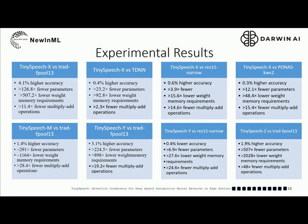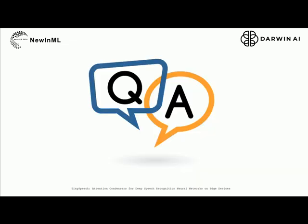Comparing tiny speech version Z with Terad FPUL13, it has about 2% better accuracy, about 500 times fewer parameters, about 2000 times less memory, and about 5 times fewer multiply-add operations. In this work, we presented several highly efficient tiny speech neural network architectures based on attention condenser modules and machine-driven design exploration. It can be observed that tiny speech networks achieved significantly lower computational complexity compared to other tested deep neural networks. Tiniest speech version X achieved the highest accuracy, and tiniest speech version Z achieved the highest computational efficiency.